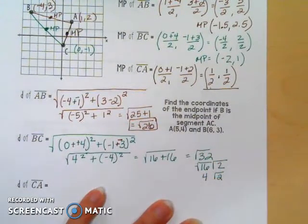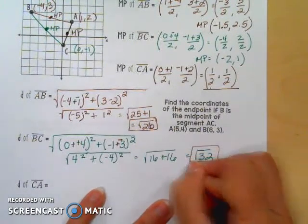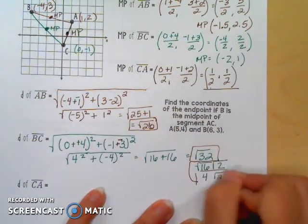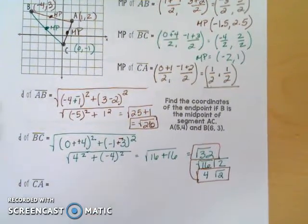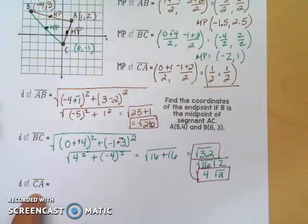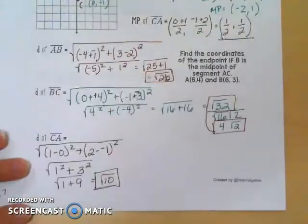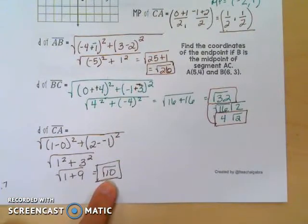If simplifying radicals is something you haven't done, you can stop at the square root of 32 — but 4 square root of 2 is the fully simplified equivalent answer. Pause the video and see if you can find the distance of CA. Hopefully when you found the distance of CA you got down to the square root of 10.